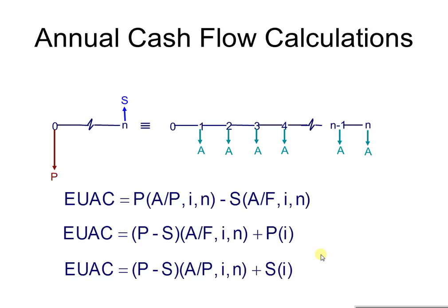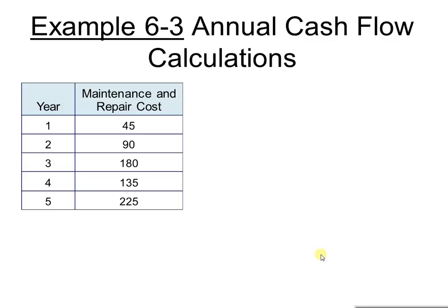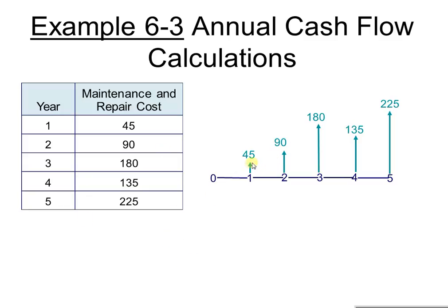Let's look at another example of annual cash flow calculations. Here we have five different years with different maintenance and repair costs: year 1 is $45, year 2 is $90, year 3 is $180, year 4 is $135, year 5 is $225. Let's plot a cash flow diagram to visualize what we have. The costs increase by 45, then by 90, then decrease back, then increase again — quite an unstructured pattern.